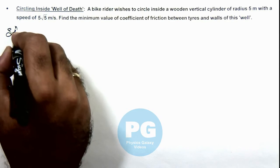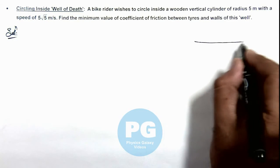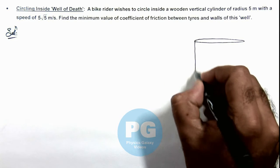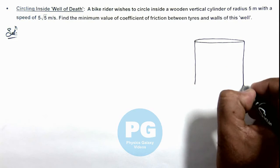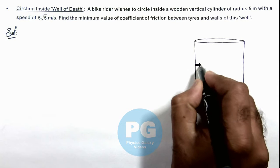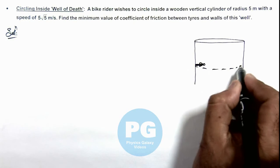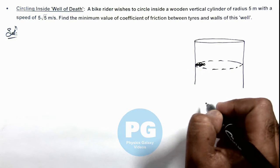In solution to understand the situation if we draw the figure, it looks like this where inside a wall say this is a bike rider who is riding inside a vertical cylinder in a circle of radius r.